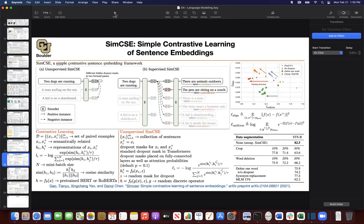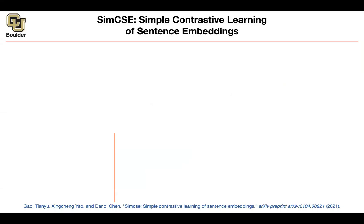What we are going to do today is along the same lines with SimCSE. I'm going through this paper for a couple of reasons: later on we're going to learn about contrastive learning and apply it to images. It's a good idea to learn about contrastive learning as a general framework applicable to text and speech as well. SimCSE stands for a Simple Contrastive Sentence Embedding framework.